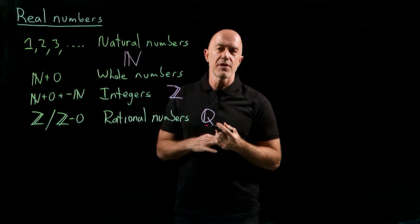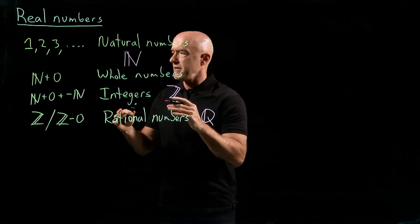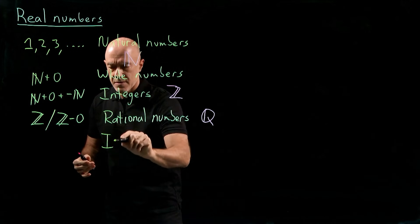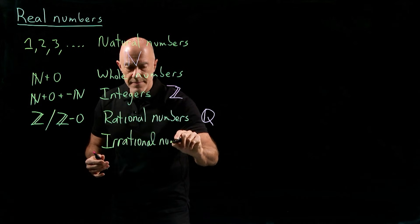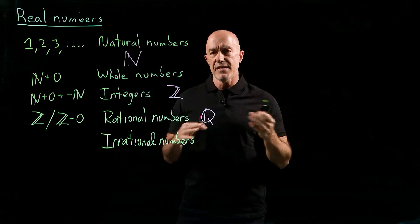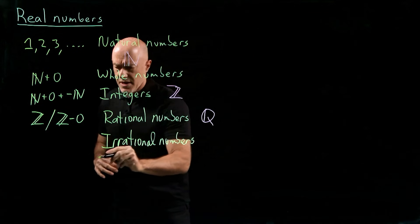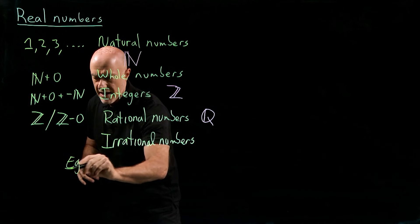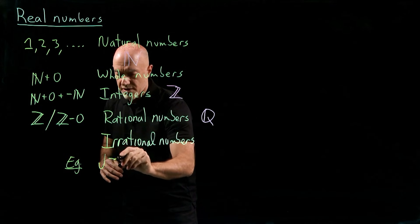Mathematicians, however, study the whole real number line. So they need what's called irrational numbers, which are numbers that cannot be represented as an integer divided by an integer. The first irrational number that was discovered was by the Pythagoreans in ancient Greece, and that's the square root of 2.